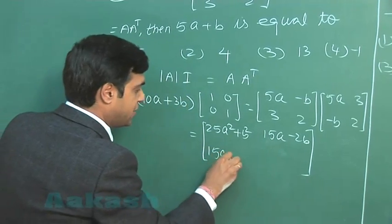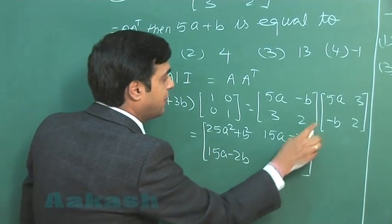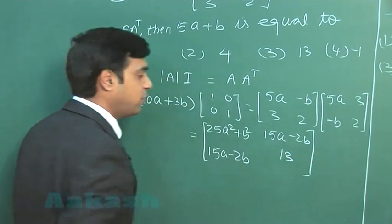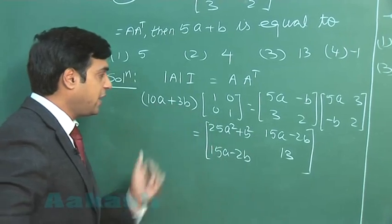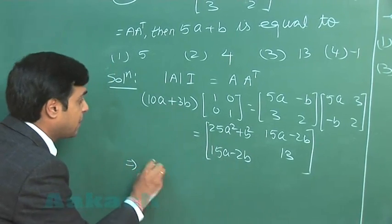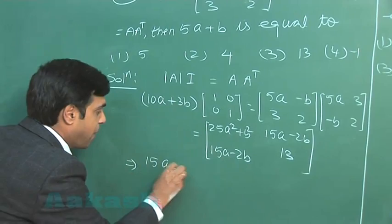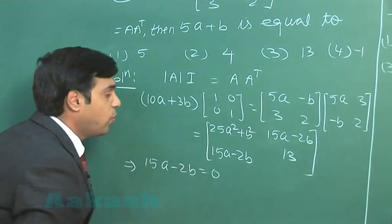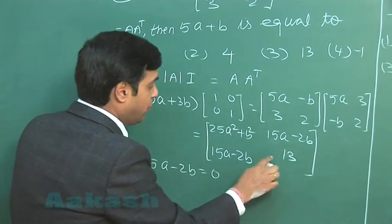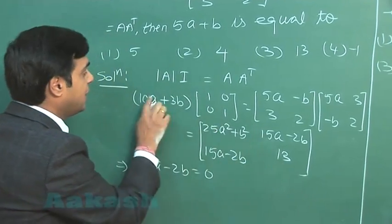Same term obtained here, and the last one, that is 9 plus 4, meaning 13. So equating the terms, we get here 15a minus 2b equals 0, and the other equation from this one, 13, we can say 10a plus 3b equals 13.